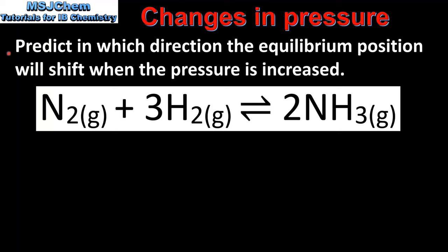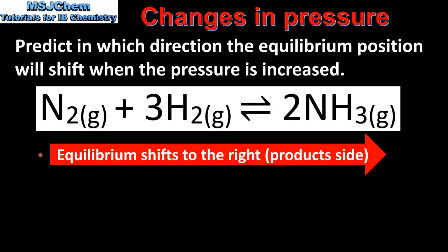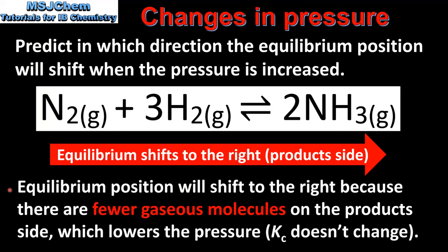In the next example we will predict in which direction the equilibrium position will shift when the pressure is increased. An increase in pressure shifts the equilibrium position to the right, which is the product side, because there are fewer gaseous molecules on the product side, which lowers the pressure. When the pressure is increased, the equilibrium position shifts to the side with fewer gaseous molecules, which has the effect of lowering the pressure of the system. Changes in pressure do not affect the value of the equilibrium constant Kc.